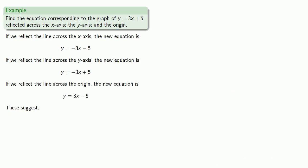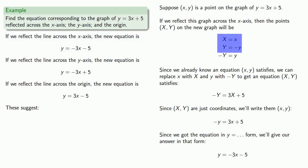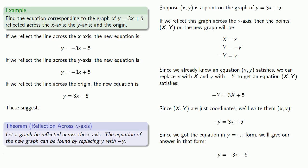These equations suggest a few theorems. The worst way to learn mathematics is to simply memorize theorems — it's more important to understand the concept. When we reflected a point across the x-axis, we got new coordinates, solved for the new variables, and replaced them in the original equation. Putting all these things together, this suggests the following theorem: let a graph be reflected across the x-axis. The equation of the new graph can be found by replacing y with negative y.